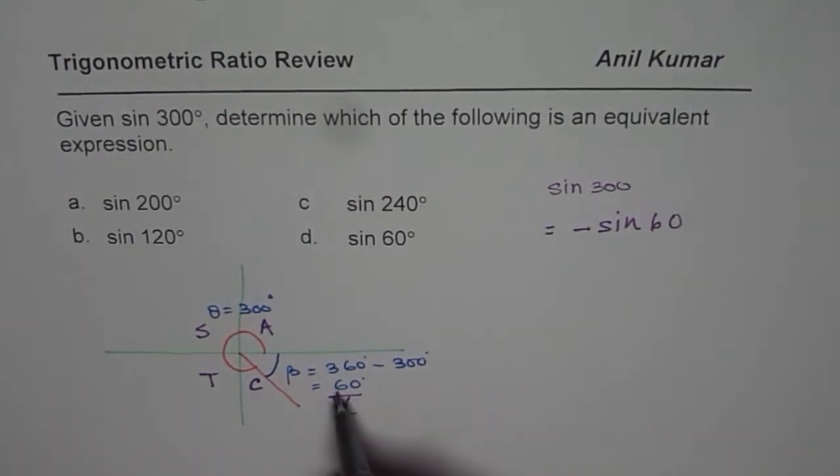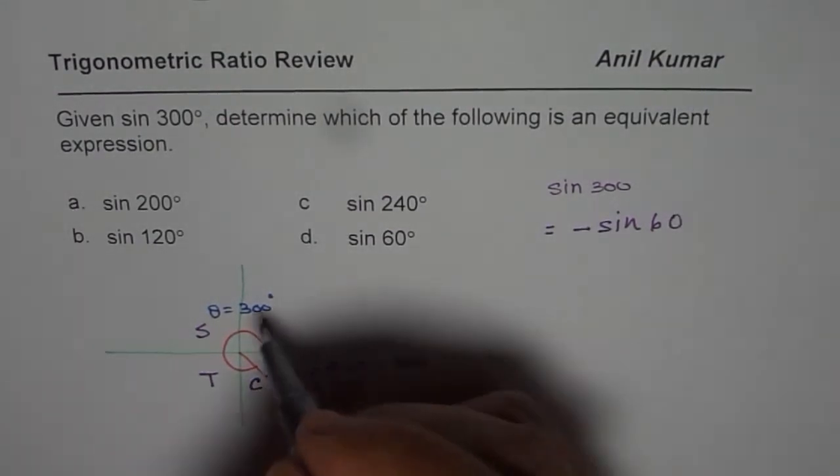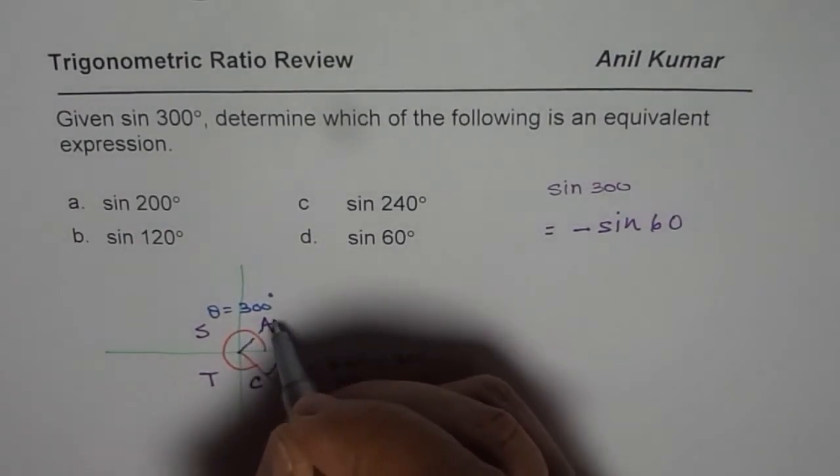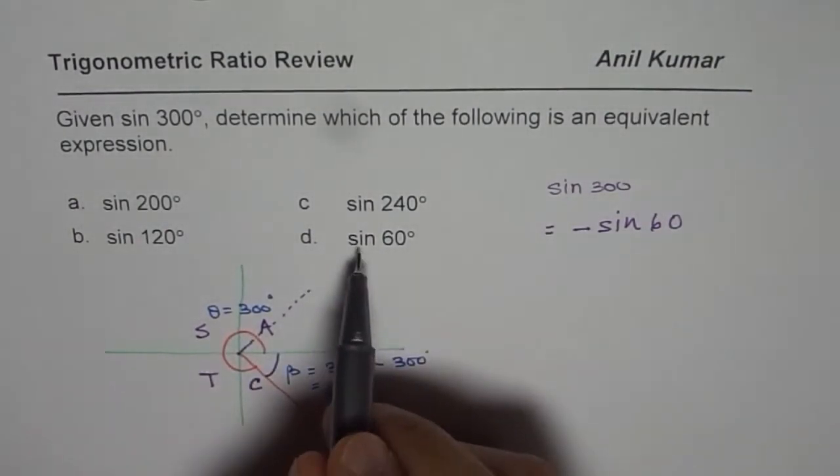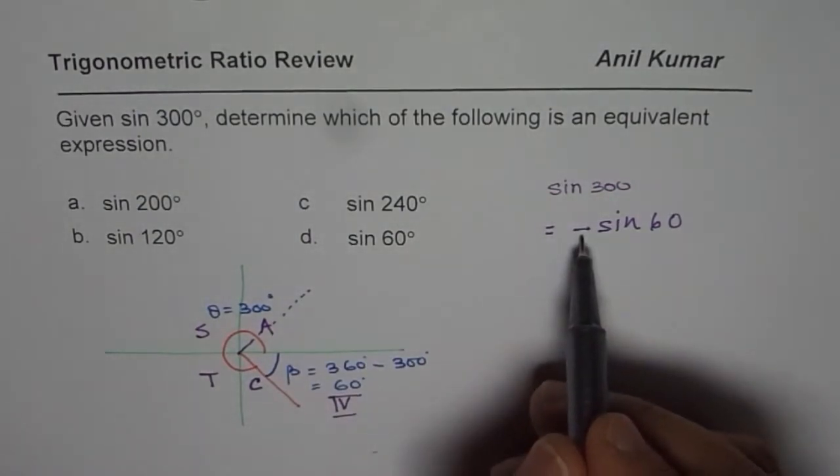So it is negative value of sine of acute angle 60. That is what it is, acute angle is 60. So if it was here, it would have been negative. But sine 60 is not the right option. This is positive value. We are looking for negative value.